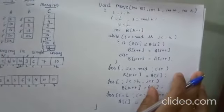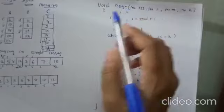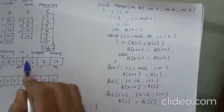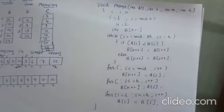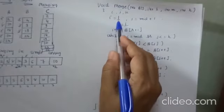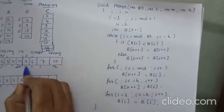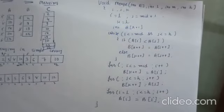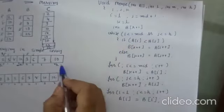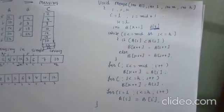Now let us discuss the algorithm of the merging procedure. We have to pass the array, lower bound, higher bound, and the midpoint. Variables I, J, and K are required. I is equal to L — initially I points to the lower bound; J points to mid plus 1; K is equal to L. We also need one additional array B of size high plus 1, so integer B of 8.